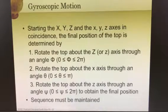Remember that this sequence should not be changed. The first one, we need to adjust the Φ, which is about the big Z axis. The second one, we change the angle θ about the small x axis. And the last one, we rotate about the z axis to an angle ψ.